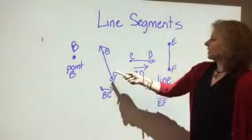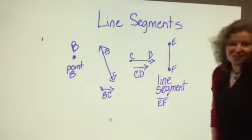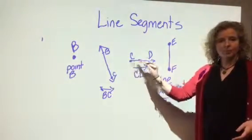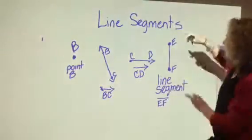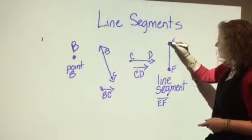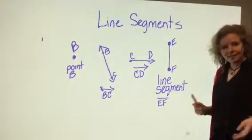A point, one spot. Line BC goes on forever in either direction. A ray has a particular place it stops and goes on forever the other way. And then we've got just a piece of the line. See how they kind of cut it off here and here? It is a line segment.